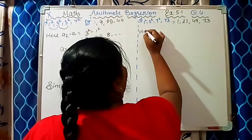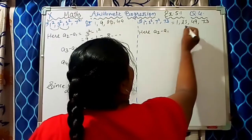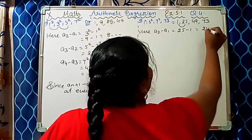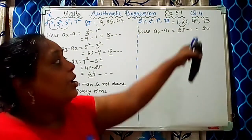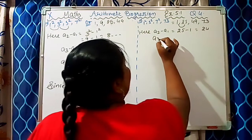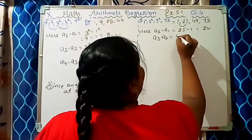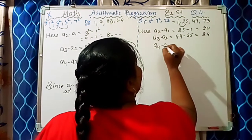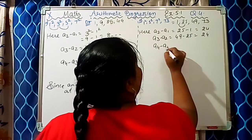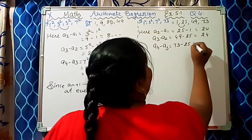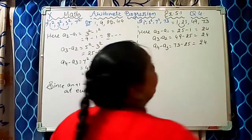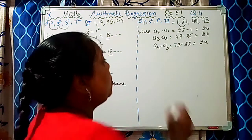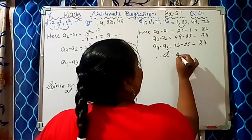Now the common difference: A2 minus A1 is 25 minus 1, which is 24. A3 minus A2 is 49 minus 25, which is also 24. A4 minus A3 is 73 minus 49, which is again 24. So our common difference D is equal to 24.